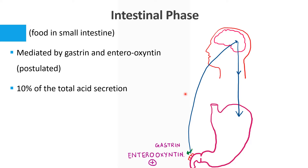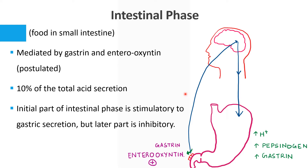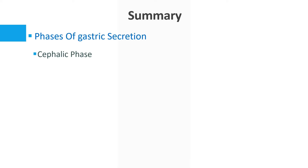Digestive products of protein — peptides — cause release of hormones like gastrin and enteroxyntin, increasing acid secretion. However, we must remember that while the initial part of the intestinal phase is stimulatory to gastric secretion, the later part is inhibitory. The acidic chyme activates the hormone secretin, which inhibits gastric secretion.